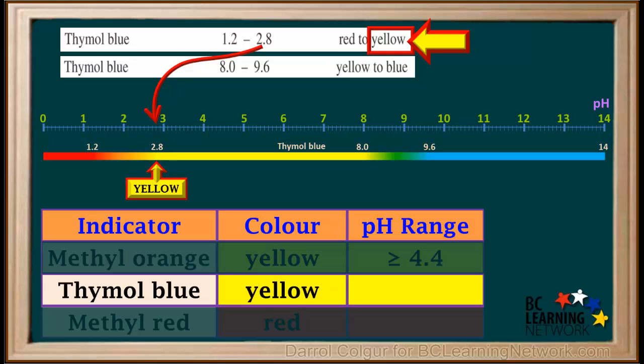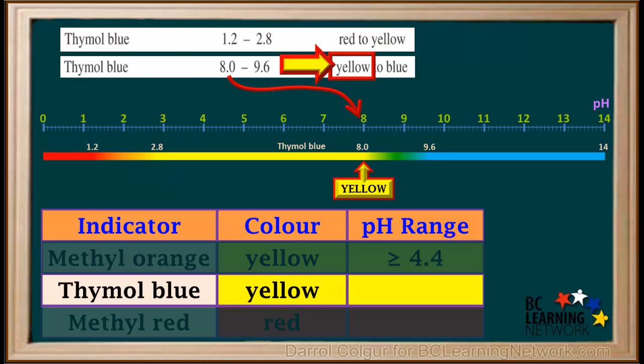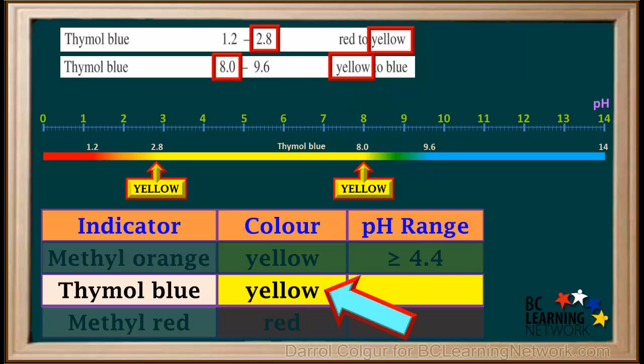Now we'll look at thymol blue. Its lines on the indicator table tell us it turns yellow at a pH of 2.8 and stays yellow until the pH increases to 8. Our table shows us that thymol blue is yellow in solution A, so this tells us the pH is somewhere between 2.8 and 8.